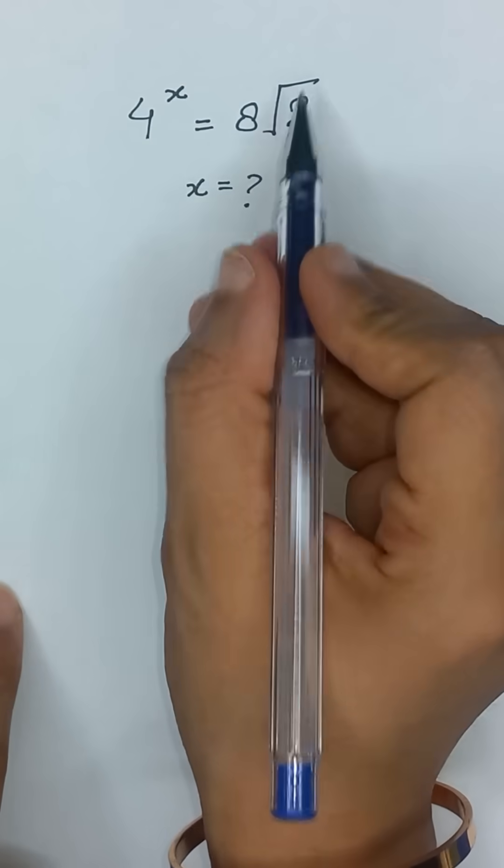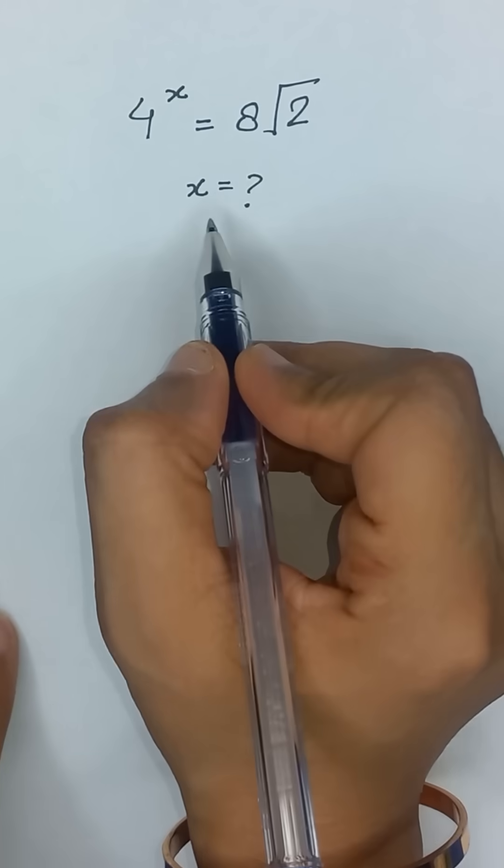4 to the power x is equal to 8 times square root of 2. What will be the value of x?